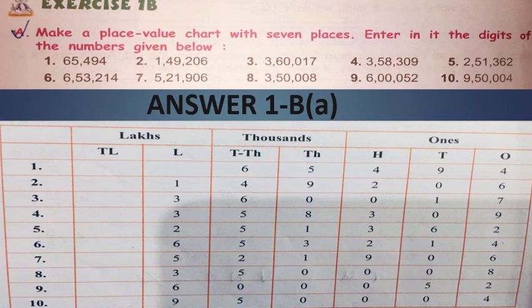Question 2: One lakh forty-nine thousand two hundred six. Six goes at the ones place, zero at the tens place, two at the hundreds place, nine at the thousands place, four at the ten thousands place, and one at the lakhs place. The answer is 1,49,206.